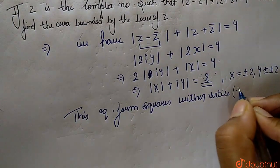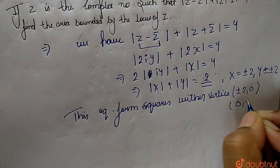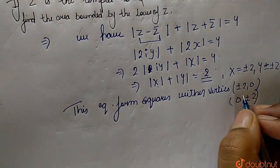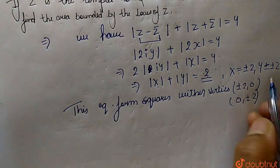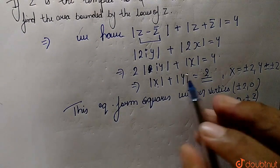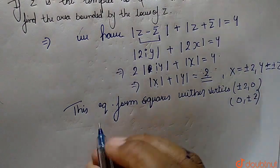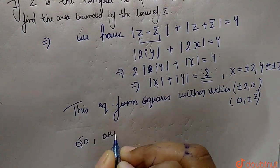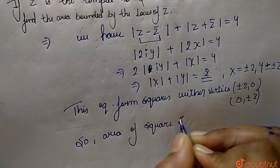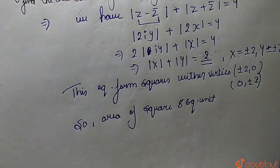So we have for x: (plus or minus 2, 0), and for y: (0, plus or minus 2). The area of this square is 2 times 4, which gives us 8. So the area of the square is 8 square units. This is the required answer for this question.